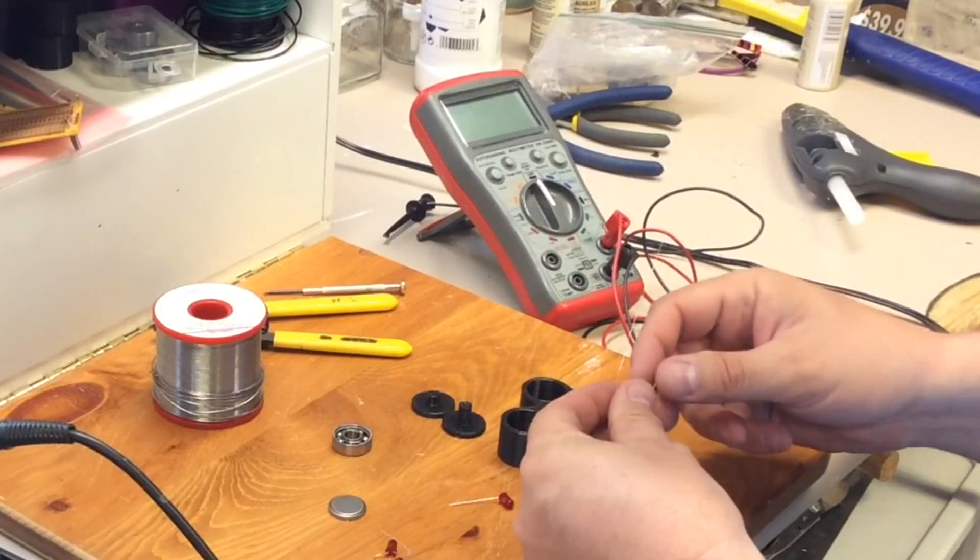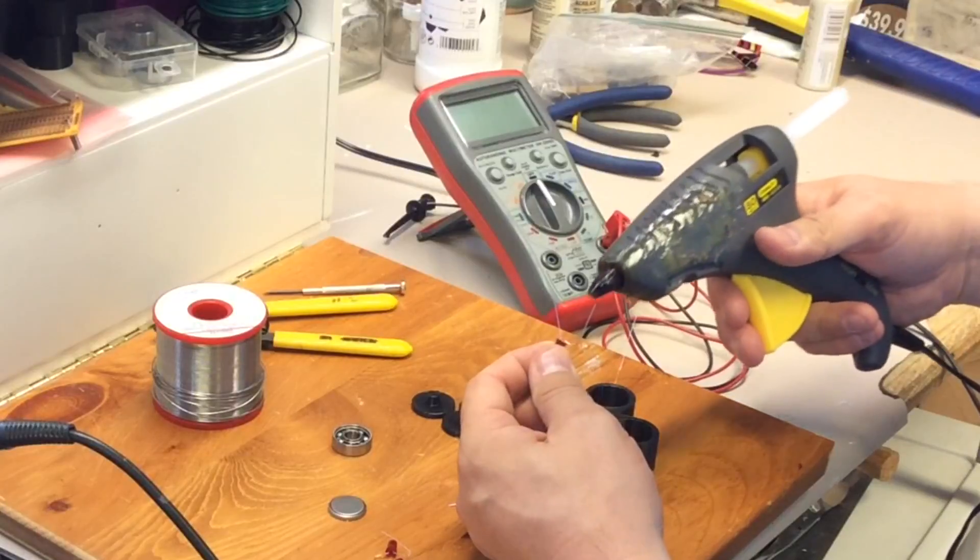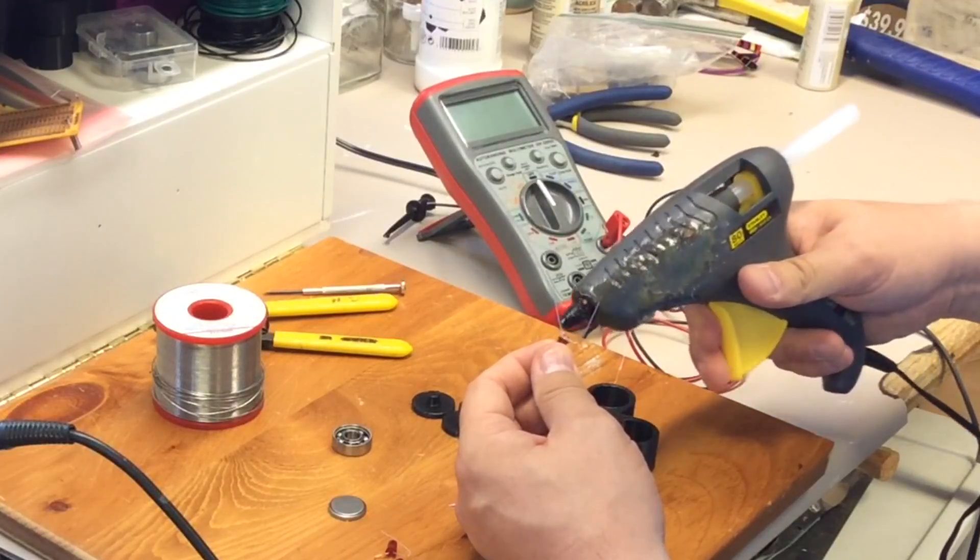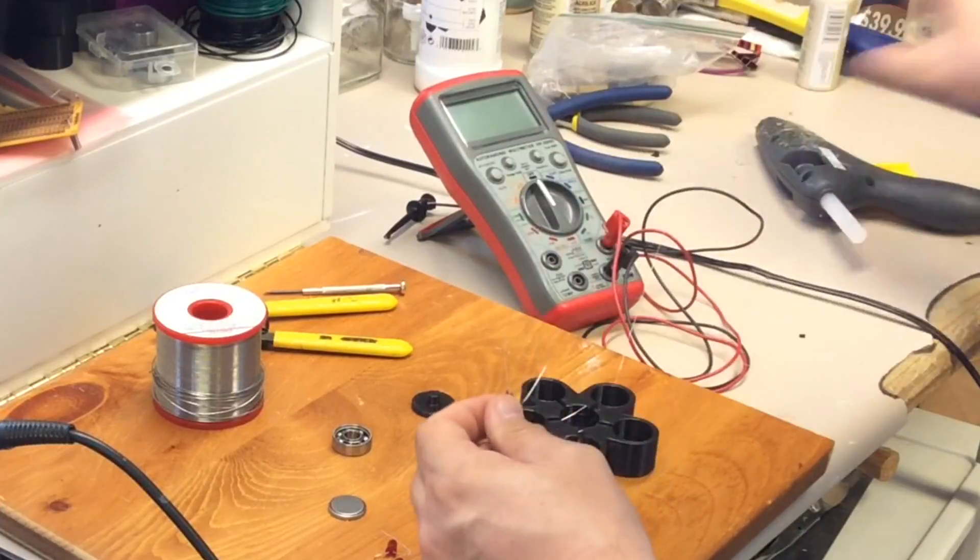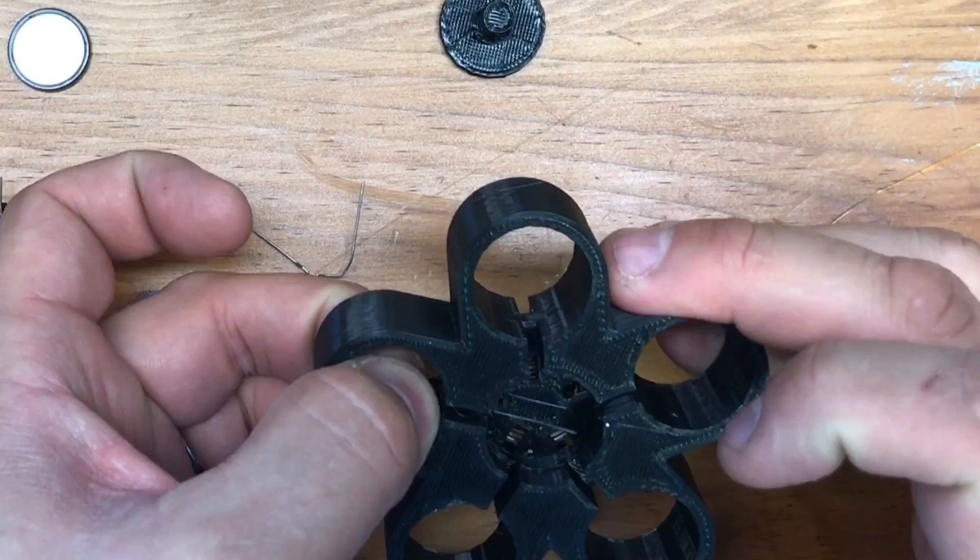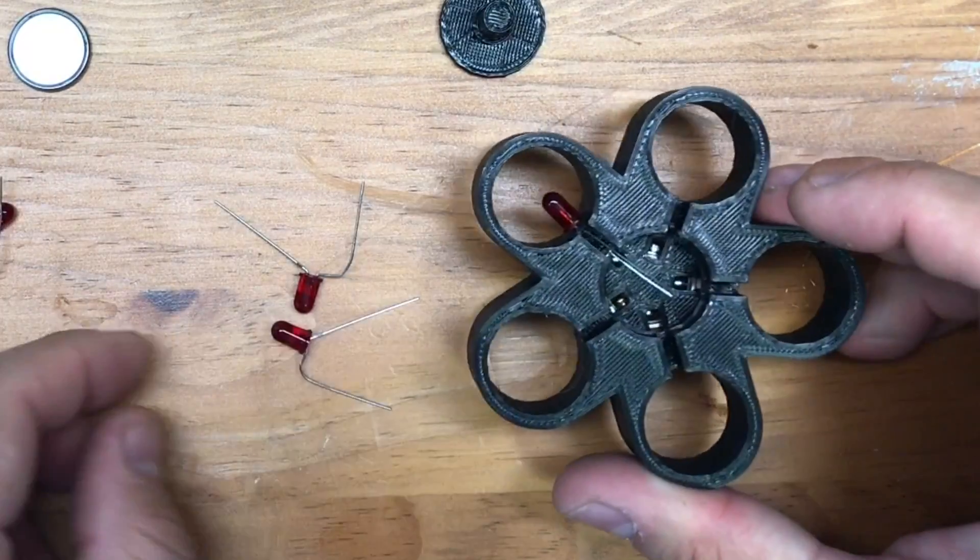So the next step was to install the LEDs and to do this I put a little bit of hot glue on the bottom of the LED to hold it in place before I soldered the wires. And this seemed to work pretty good and I bent the leads out and I needed to get the positive lead to come in the bottom and then the negative lead on top.